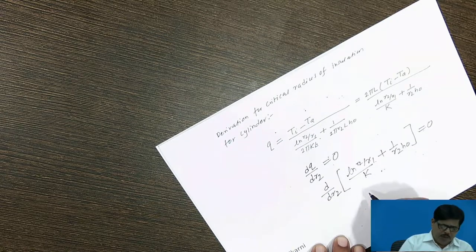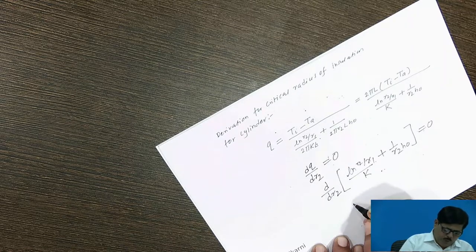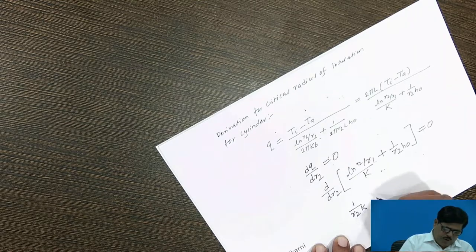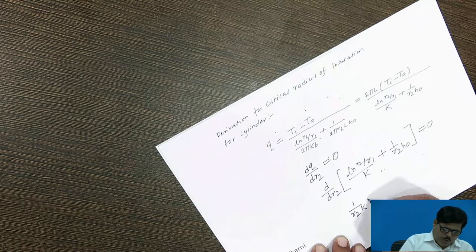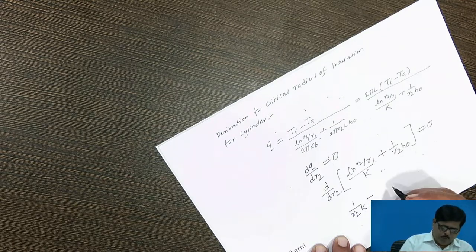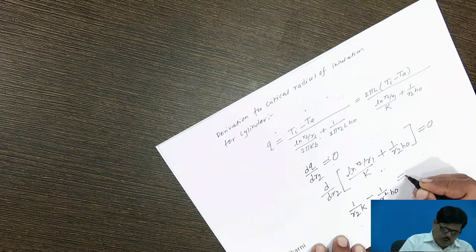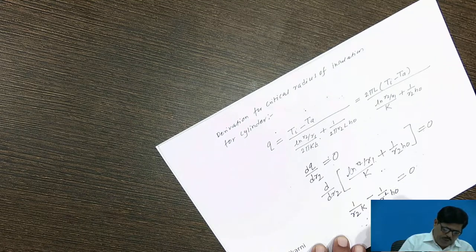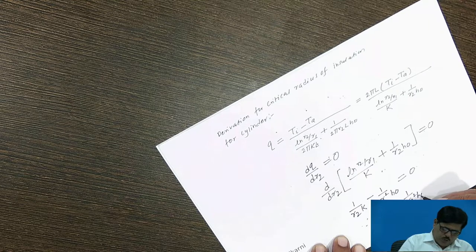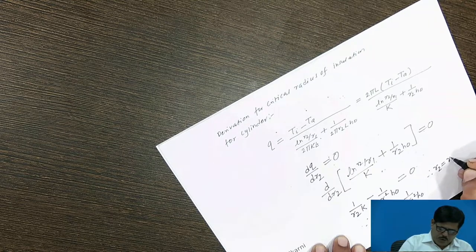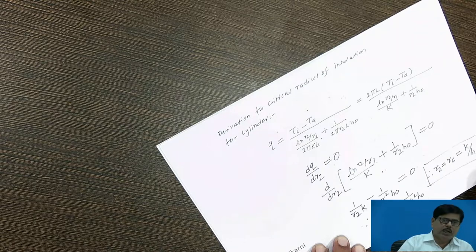Differentiating the denominator with respect to R2: the derivative of ln(R2)/K gives 1/(R2·K), the derivative of ln(R1)/K is zero (constant term), and the derivative of 1/(R2·HO) gives −1/(R2²·HO). Setting equal to zero: 1/(R2·K) − 1/(R2²·HO) = 0. Rearranging, 1/(R2·K) = 1/(R2²·HO), which gives R2 = K/HO. Therefore, the critical radius of insulation for a cylindrical surface is RC = K/HO.